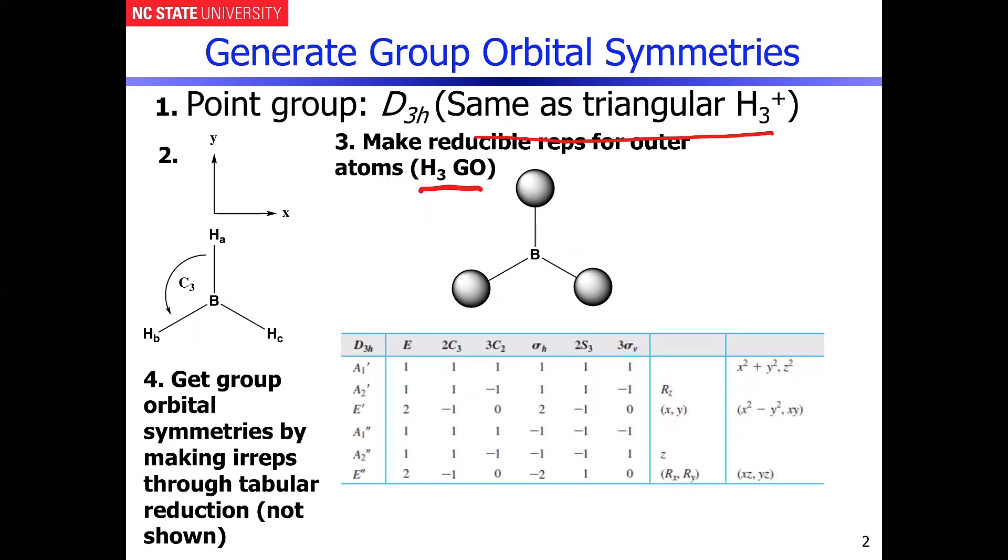And the point that we have to now work through is we have to see the result of what happens to every one of these atoms in each of the operational classes that are in the point group. So that'll allow us to then make this representation.